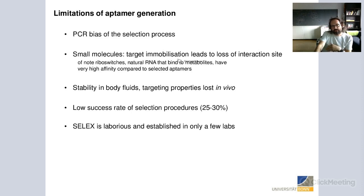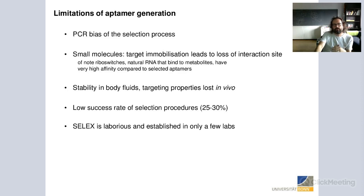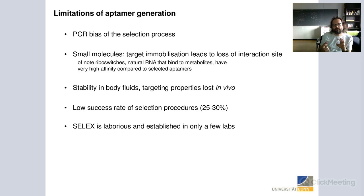For small molecule targets, immobilization on magnetic particles or Sepharose requires chemistry, which can block a specific target site that aptamers might bind, and can generate new epitopes potentially involved in aptamer binding. Importantly, natural RNA molecules found in nature — so-called riboswitches — bind to small metabolites with very high affinity, making contacts with each domain of the small molecule, thereby achieving really high affinities.